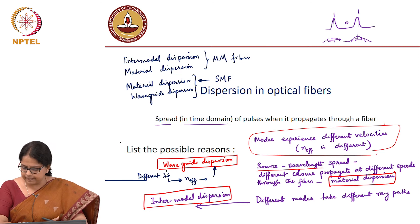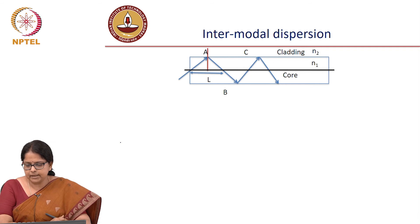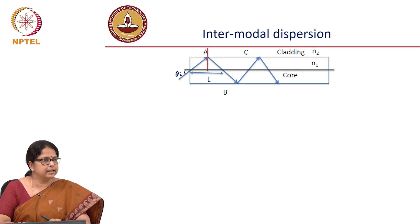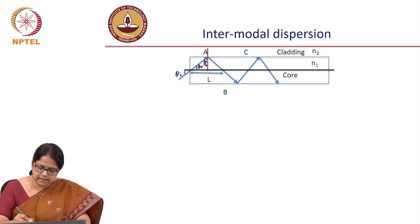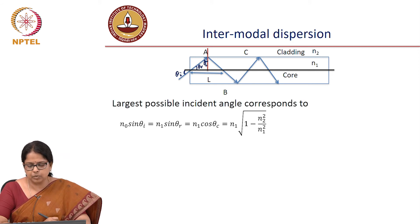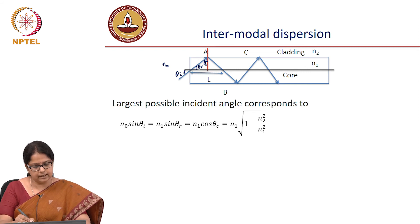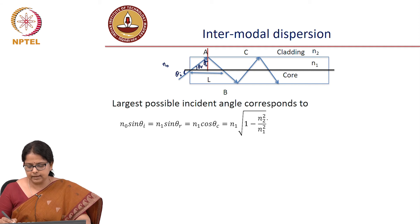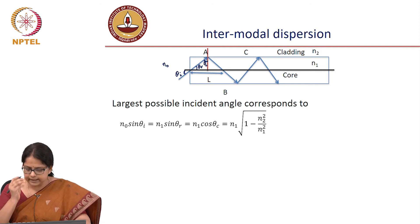Now we talk about intermodal dispersion first, which is quite straightforward to calculate. Let us say theta_i is the incident angle, theta_r is the reflected angle, and theta_c is the critical angle. The largest possible incident angle corresponds to the critical angle condition: n0 sin(theta_i) = n1 sin(theta_r) = n1 cos(theta_c), simply because theta_r plus theta_c equals 90 degrees. cos(theta_c) equals the square root of 1 minus sin²(theta_c), and sin(theta_c) = n2/n1.